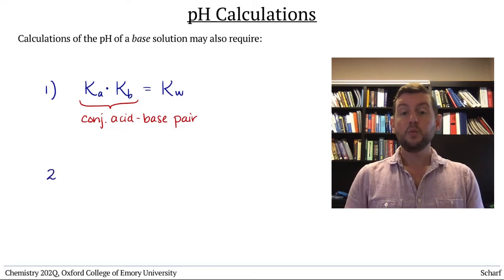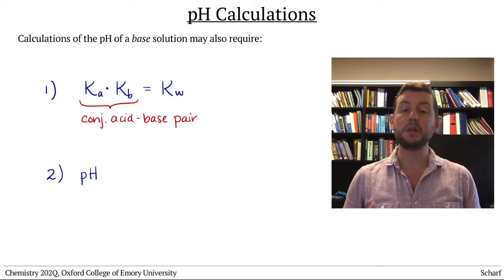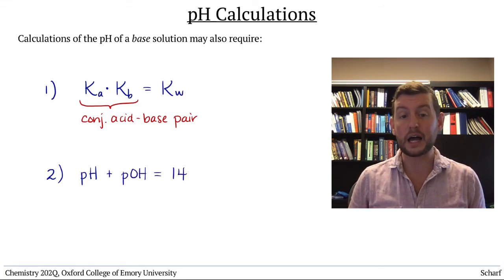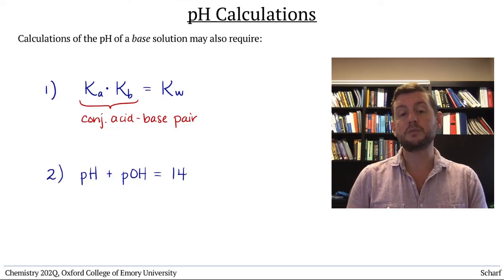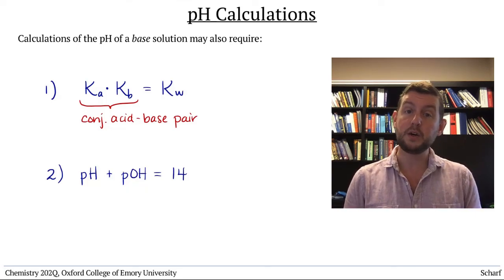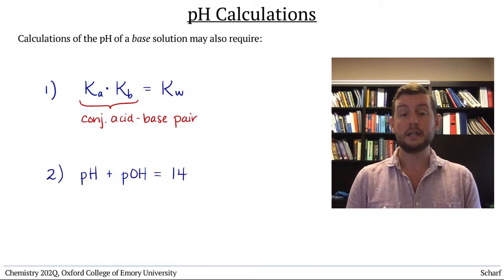Second, we usually end up calculating the equilibrium concentration of hydroxide when we're working with a base, so you often need to use the relationship pH plus pOH equals 14 to help you determine the pH of a base solution.